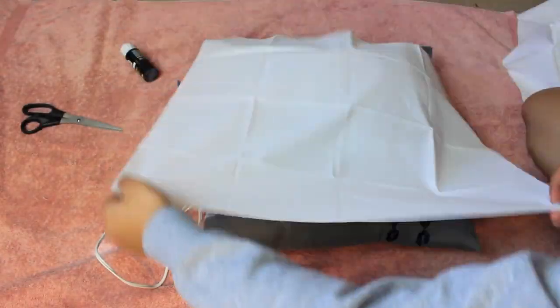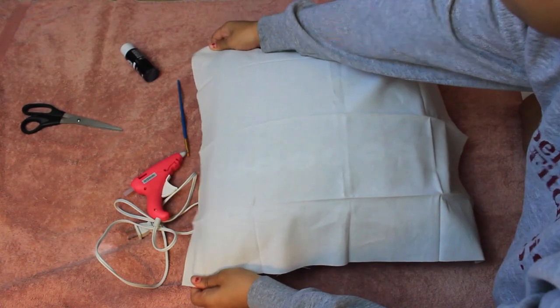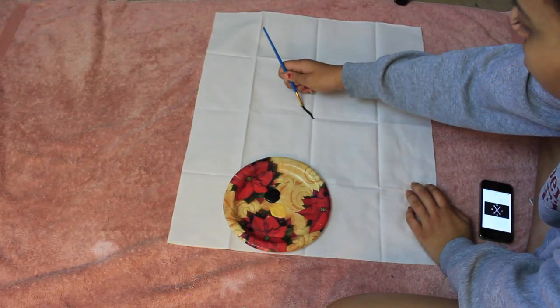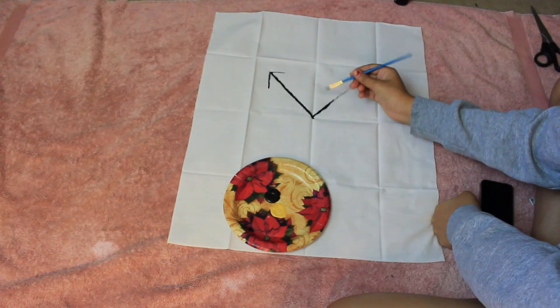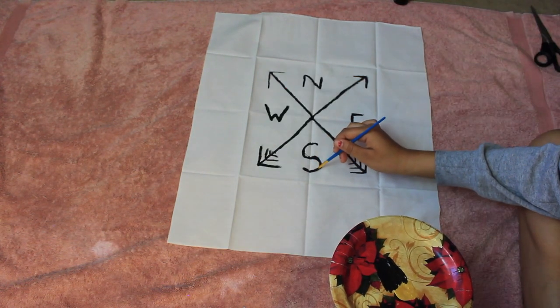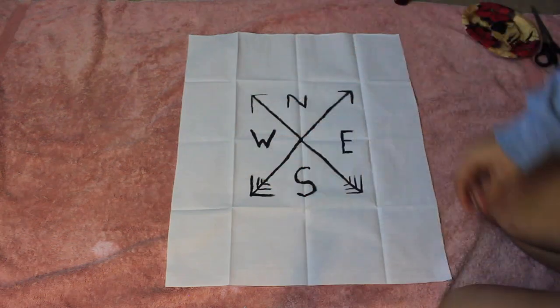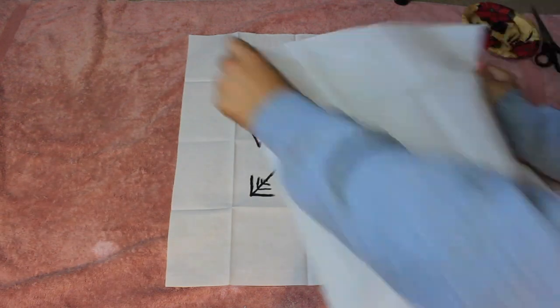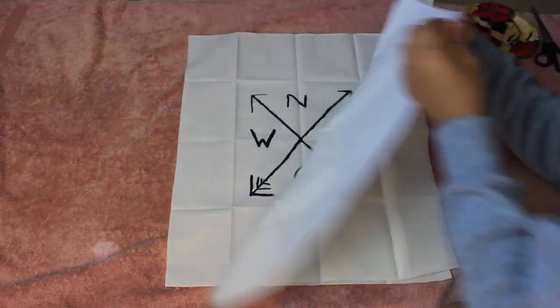So first I'm using the fabric to measure out how it's going to fit on the pillow and I got my fabric from Walmart. And now I'm just painting out on my fabric the design I want and I got my design from Pinterest. I absolutely love it. Then I'm going to place the other piece of fabric on top of it.